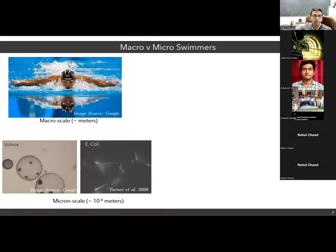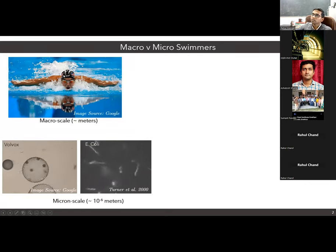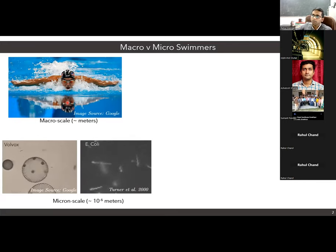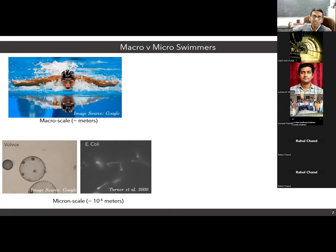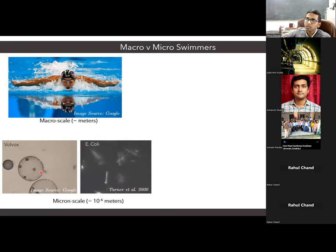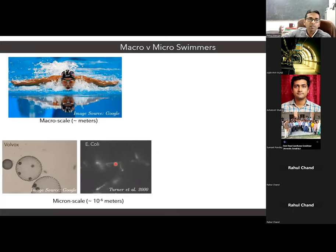When we think of micro-swimmers, probably the first image that pops in our mind is something like this. He is Michael Phelps, who is one of the most celebrated athletes in the history of Olympics. But my focus for today's talk is not on a swimmer like this, rather on micron length-scale swimmers such as these biological micro-swimmers. On the left we have volvox, which is an algae, and on the right we have E. coli, which is a very commonly known bacteria.